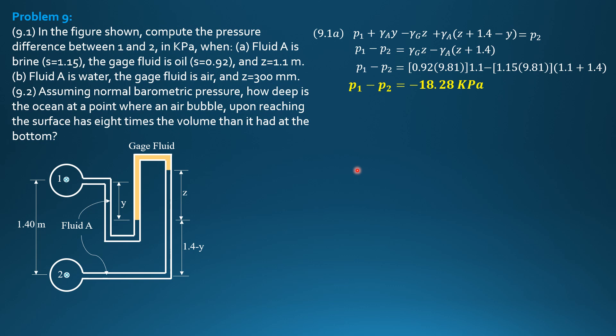Then, for 9.1B, fluid A is water. The gauge fluid is air. So, if this is air, that means gamma of the gauge liquid is negligible. So, we still use this equation because the result would still be this equation here. So, P1 minus P2 equals gamma of the gauge liquid times Z minus gamma of fluid A, which is this time water, times quantity Z plus 1.4.